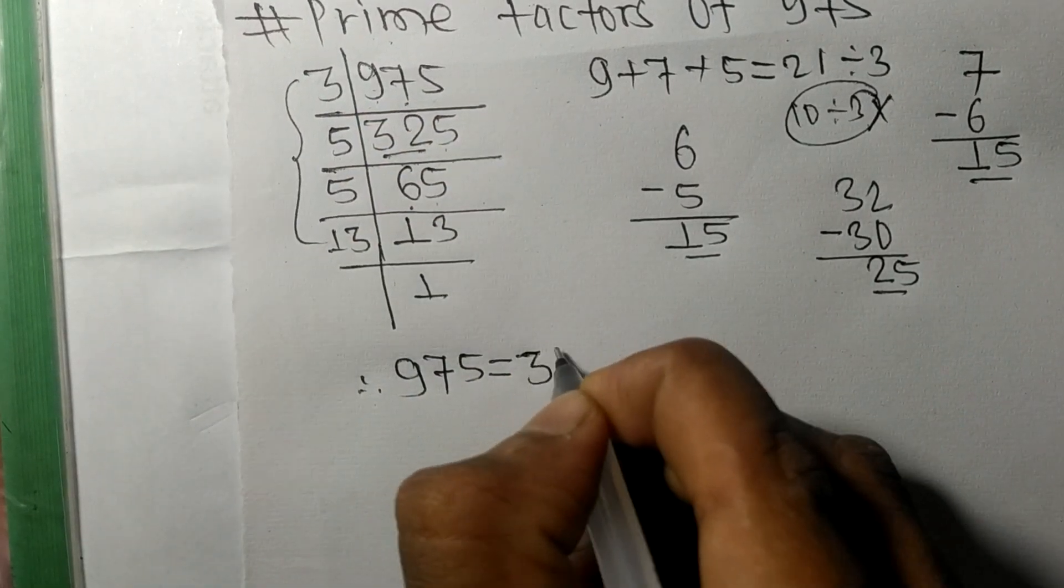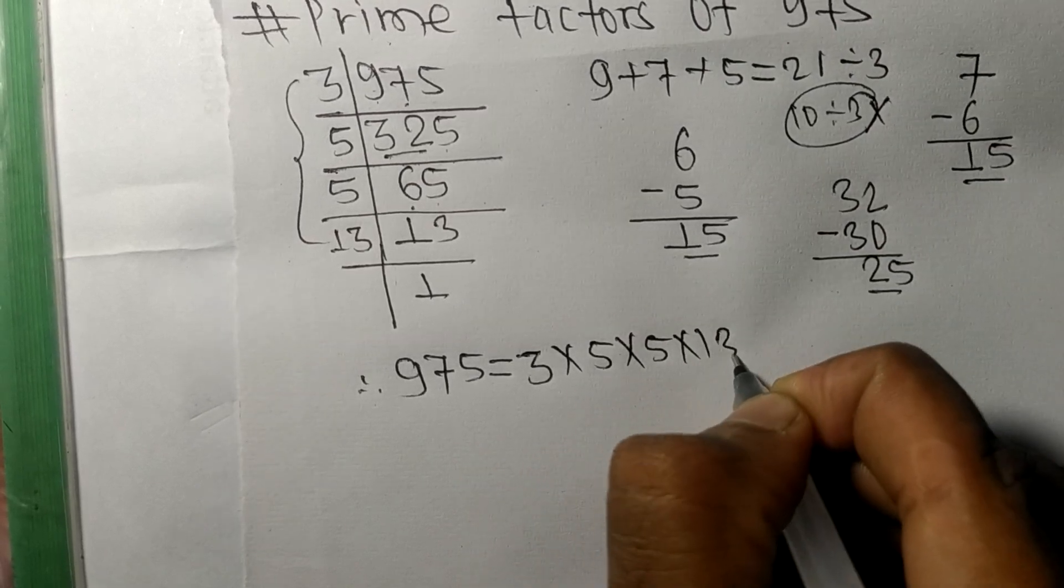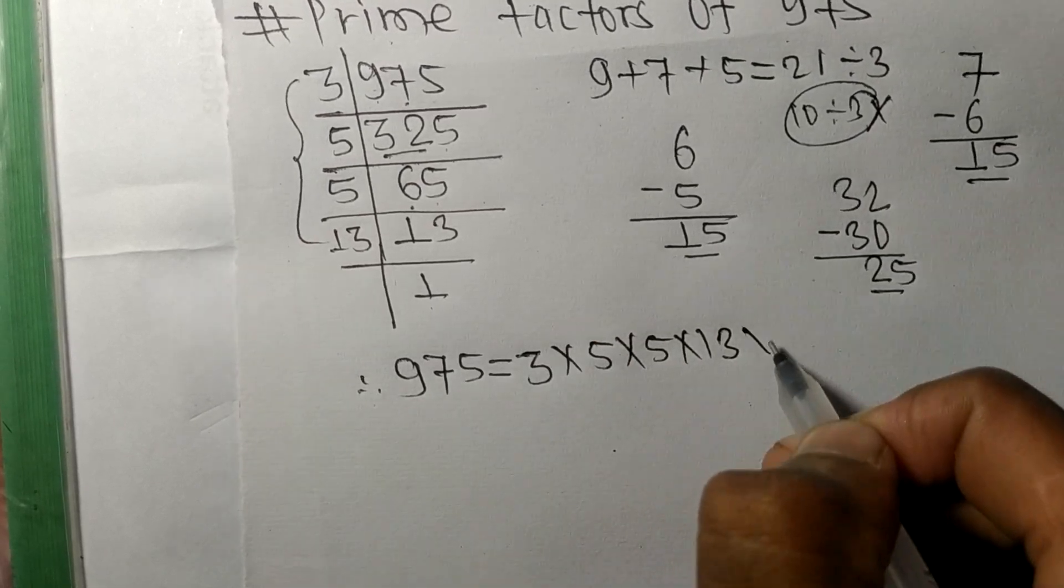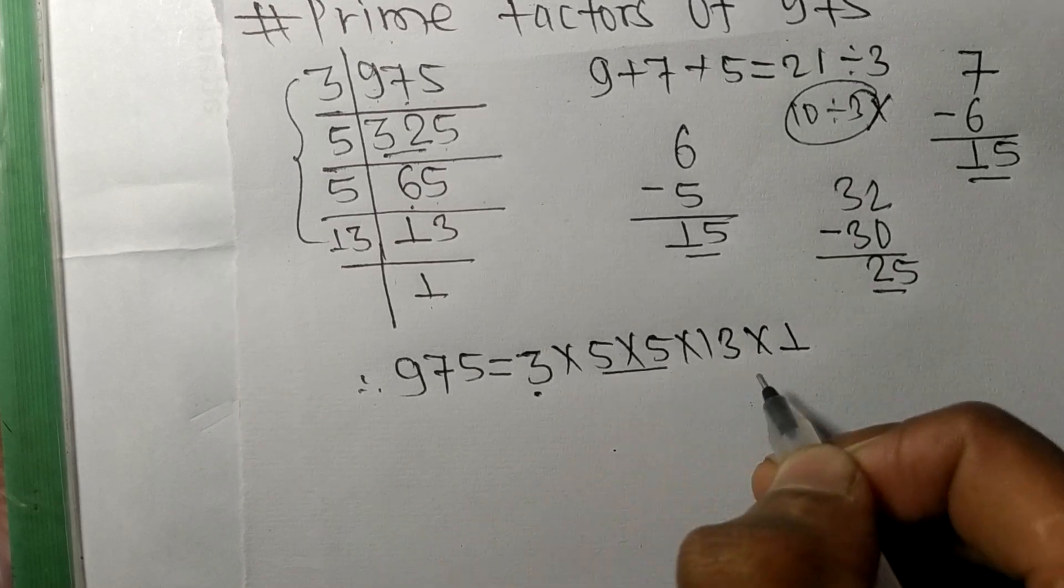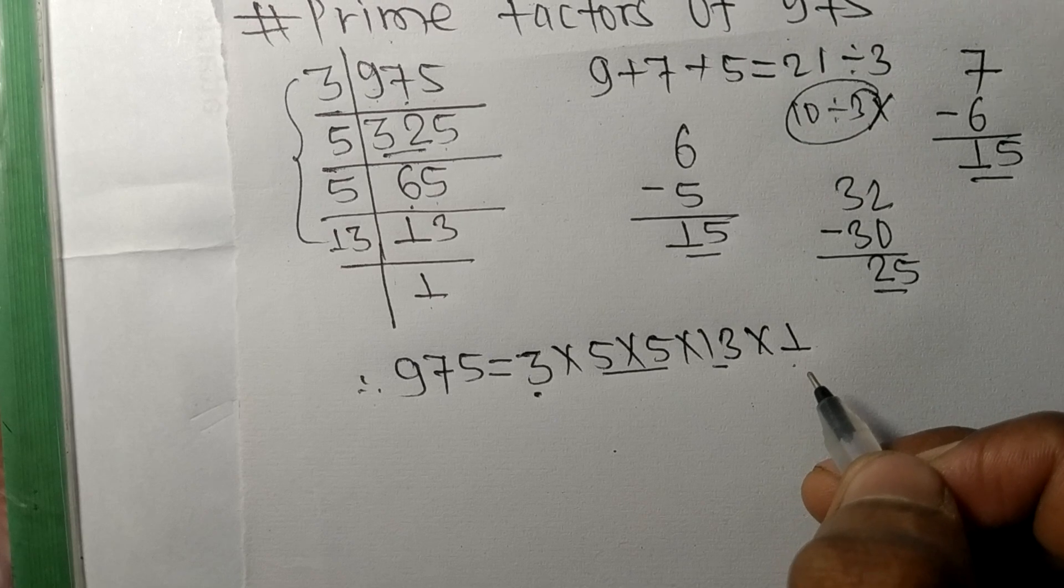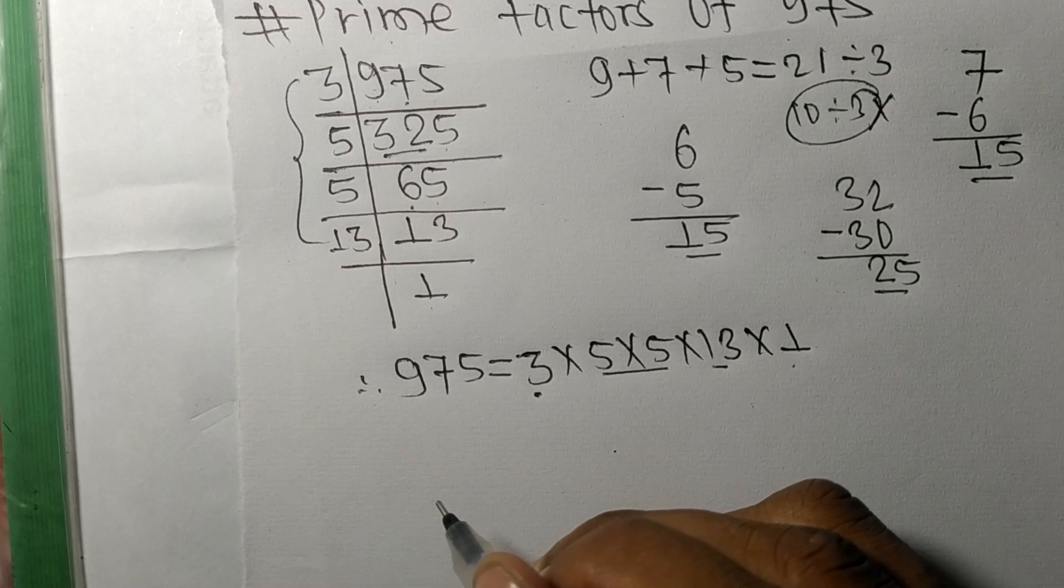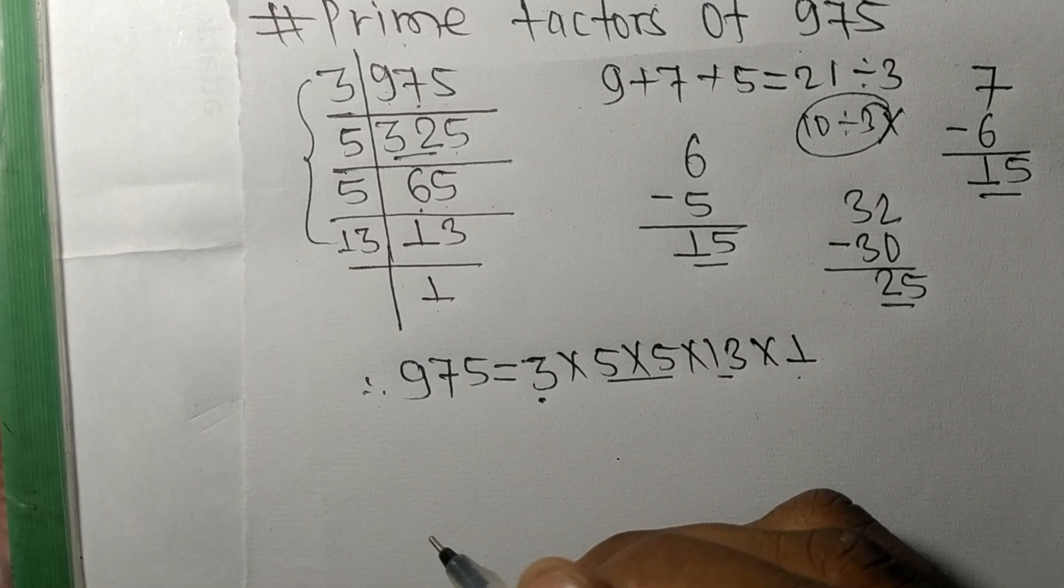From here it is 1, so 3, 5, 13, and 1 are the prime factors of 975. So this much for today, and thanks for watching.